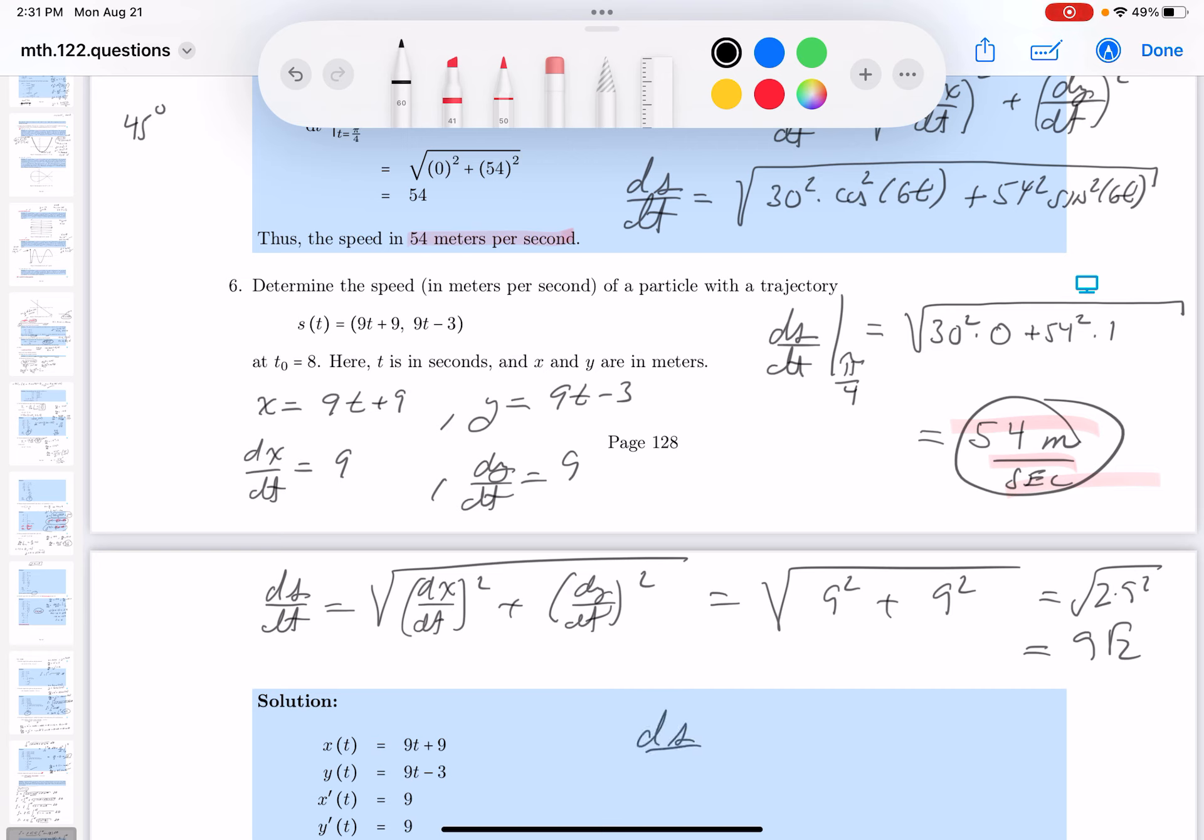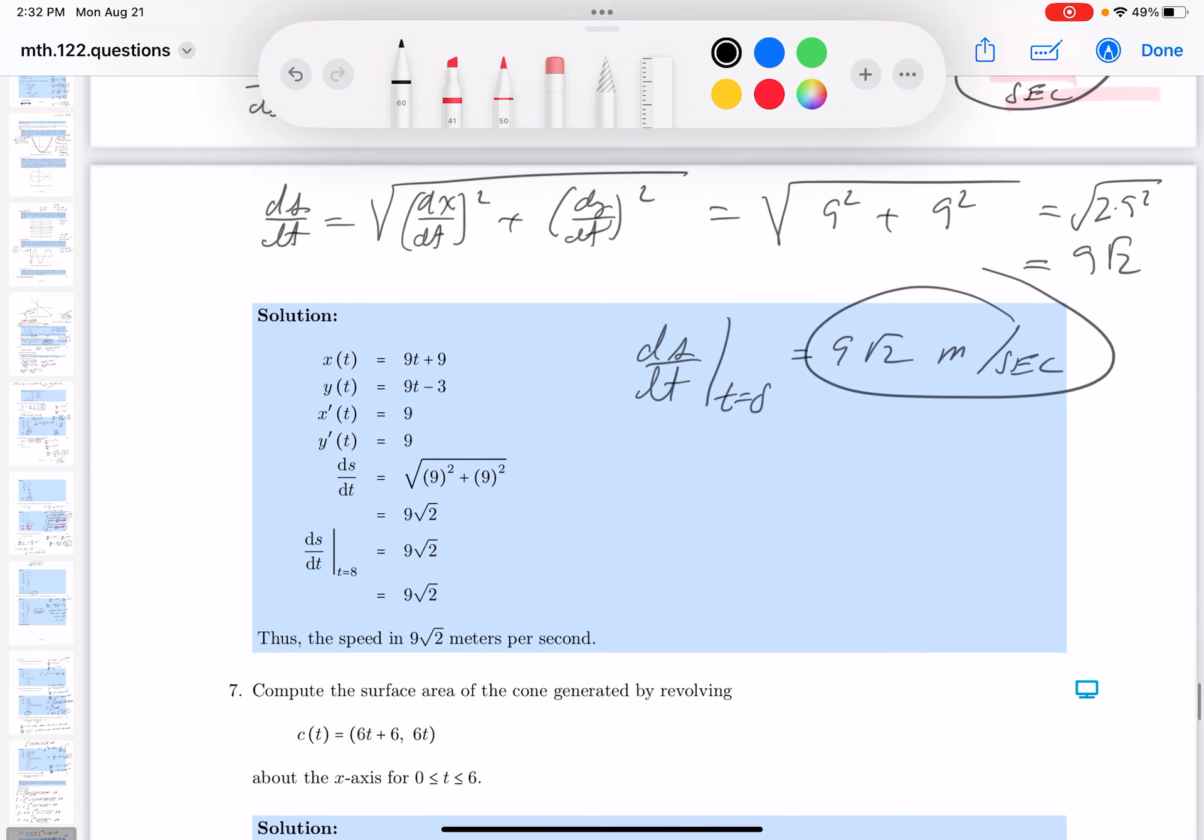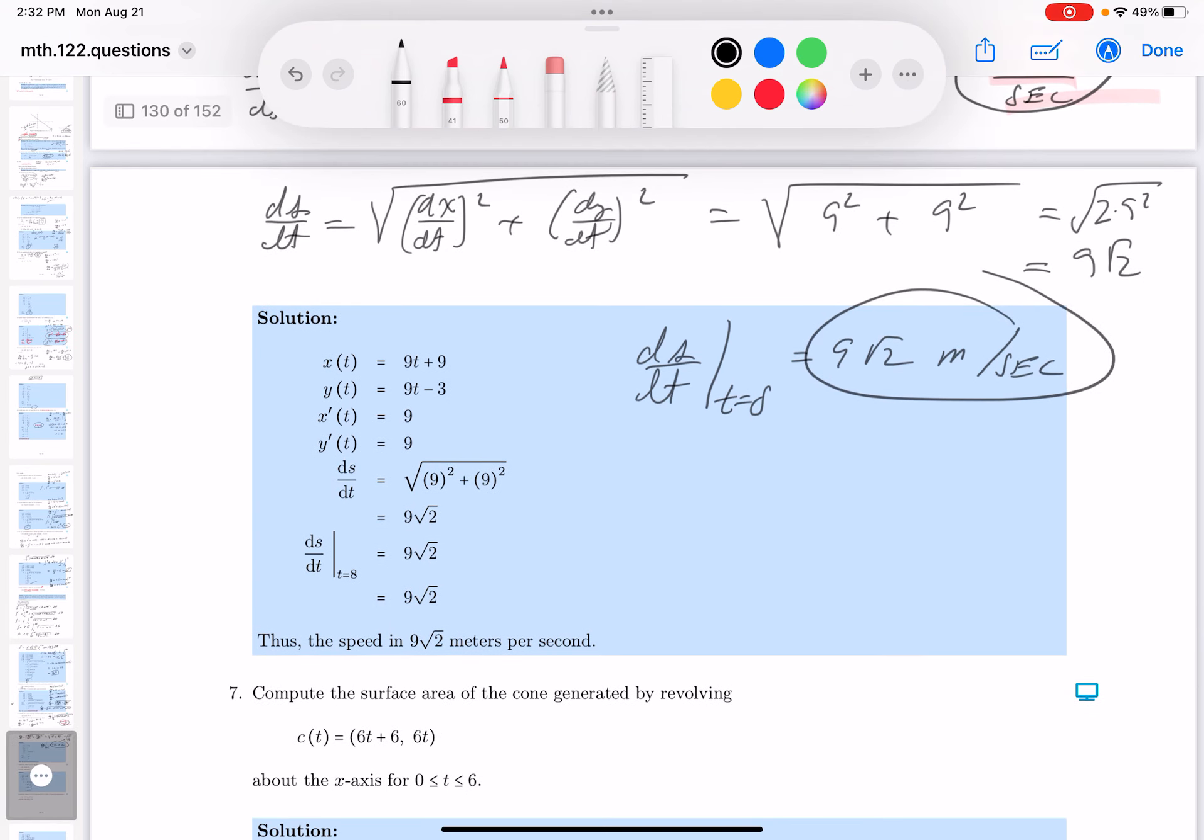ds dt when t equals 8. And what does that give you? 9 root 2 meters per second. All right. Let's look at the key, see how we did. And that speed is 9 root 2 meters per second. Thank you.